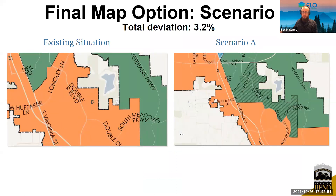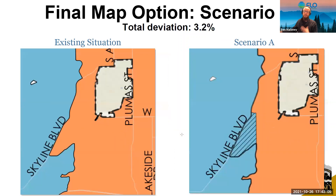One of the bigger changes in Scenario A takes place over by Rattlesnake, looking at South Meadows Parkway, Longley Lane, and Double-R Boulevard, where a good chunk of Ward 2 is transferred over to Ward 3 to help balance the population toward that ideal. One of the smallest changes is right by Skyline, where a small area shifts from Ward 1 to Ward 2 — or Ward 2 to Ward 1 — making that neighborhood a bit less confusing for residents, more contiguous, more compact for Ward 1, and bringing the total deviation slightly lower.